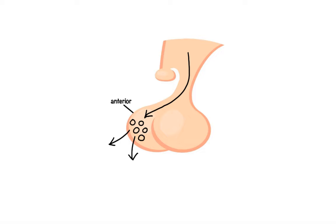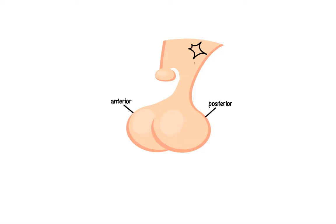And a posterior lobe, which contains neuronal projections extending from the hypothalamus that produce and then directly secrete hormones into the circulation.